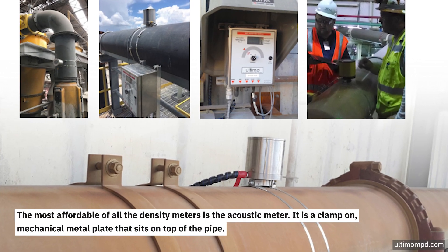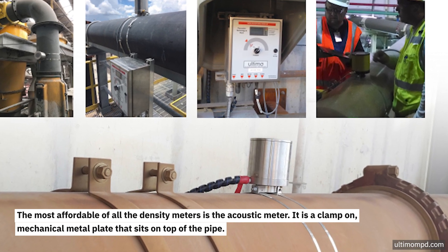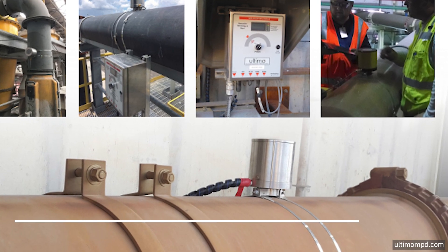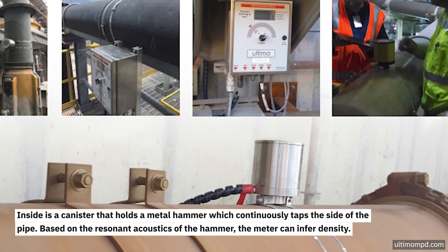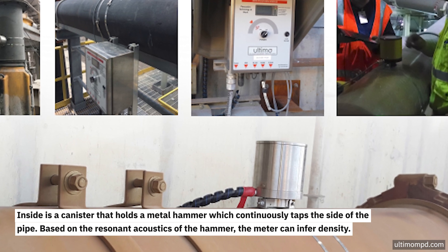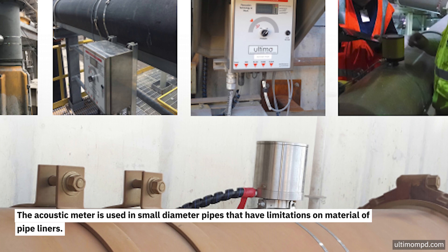The most affordable of all the density meters is the acoustic meter. It is a clamp-on mechanical metal plate that sits on top of the pipe. Inside is a canister that holds a metal hammer which continuously taps the side of the pipe. Based on the resonant acoustics of the hammer, the meter can infer density.